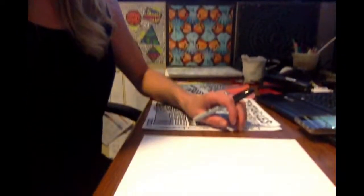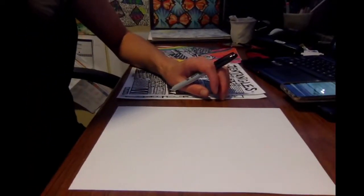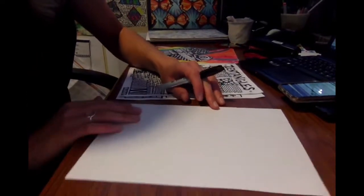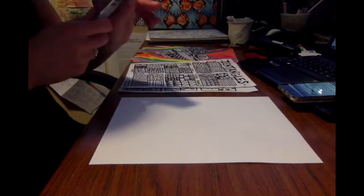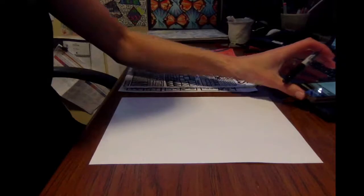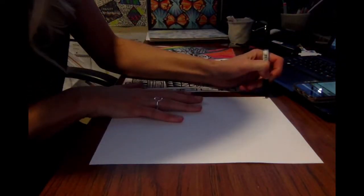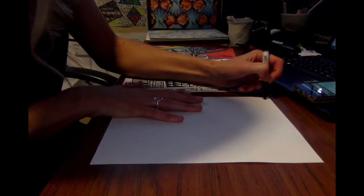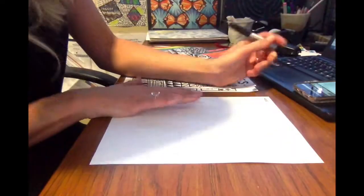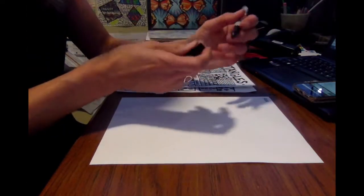So the first thing on your white paper, you're going to put your name up at the top in really neat handwriting. Next we're going to trace the hand.